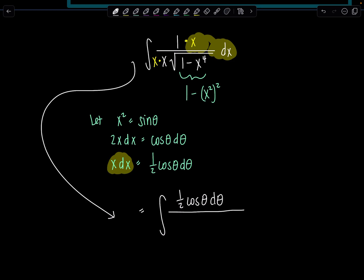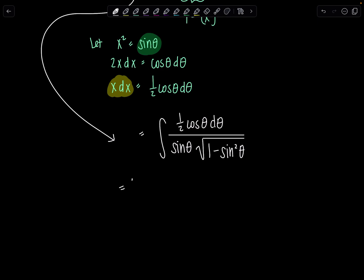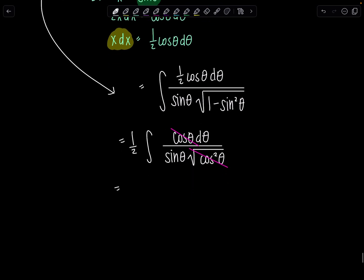I'll replace it with 1 half cosine theta d theta. Okay, we're good. And then down here, look, x times x is x squared which is sine theta. And then I have square root 1 minus sine squared theta. Beautiful, right? Not bad. Let's take the 1 half outside. Then we have integral cosine theta d theta over sine theta times the square root of cosine squared theta. Square root of cosine squared theta, absolute value cosine theta. But don't worry, we've restricted theta so we know it's positive. I'm just going to cancel these out.